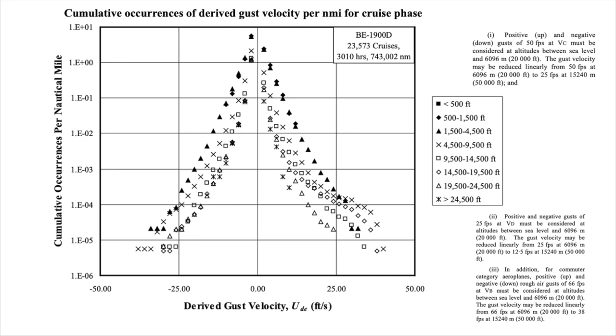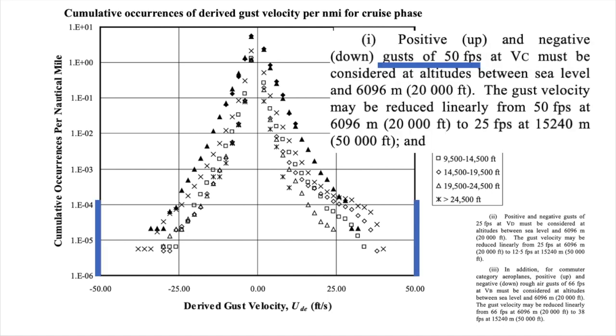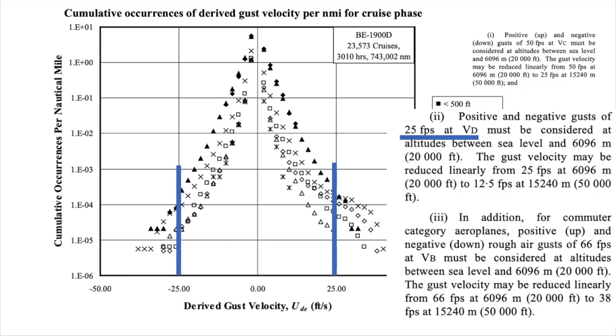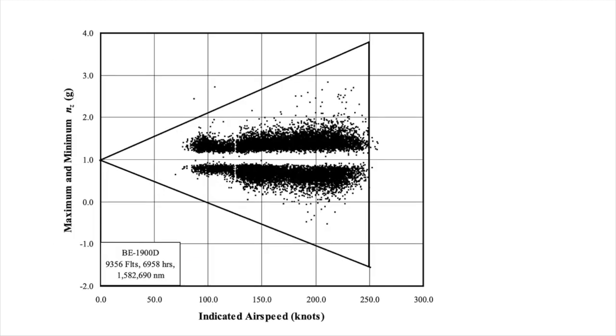The authors of the report also estimated the gust velocities encountered by the six turboprops in cruise. From the point of view of the VN diagram algorithms prescribed by Part 23, this is a reassuring picture because the data falls comfortably into the minus 50 to plus 50 feet per second gust speed range stipulated at cruise speed. In fact, most of the data is contained even within the dive speed gust range of minus 25 to 25 feet per second.